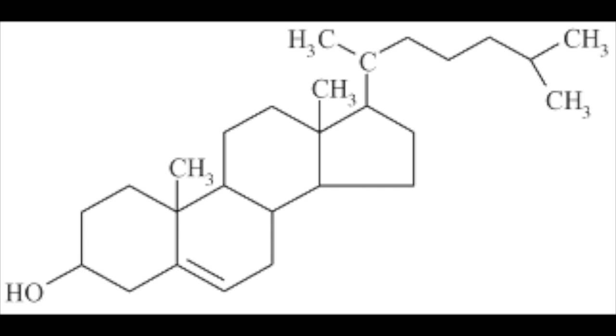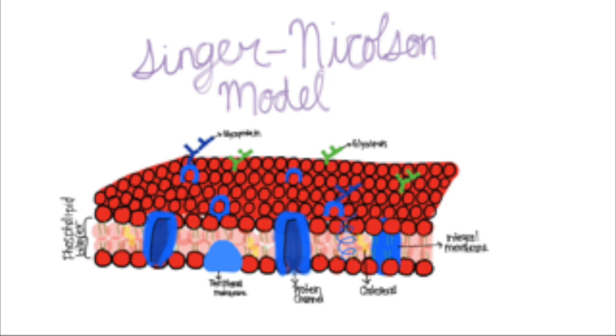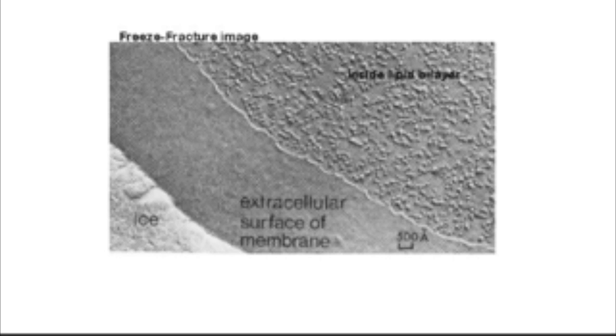It was discovered that proteins are dispersed throughout the membrane through the freeze-fracturing technique. This is when the cell is frozen and then fractured, revealing a rough surface, which indicates that the proteins are diffused throughout the membrane.